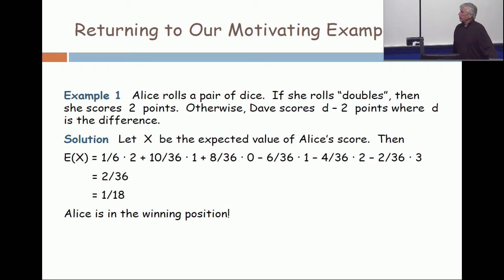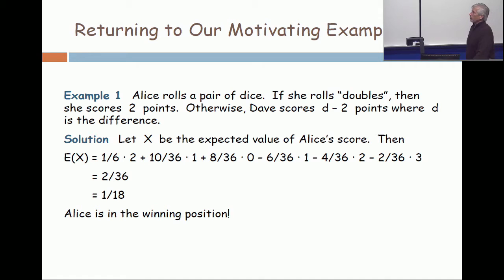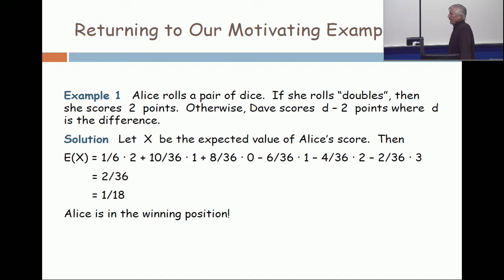Let's go back to this example. Alice rolls a pair of dice. She rolls doubles and scores two points. Otherwise, Dave scores d minus two points, where d is the difference. Let's get the expected value.